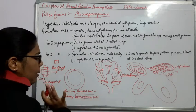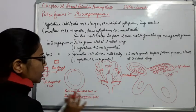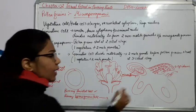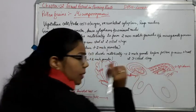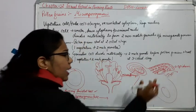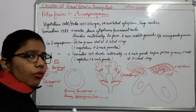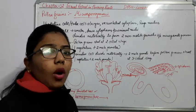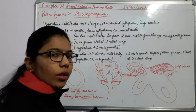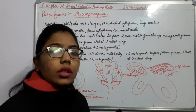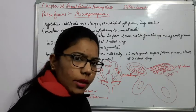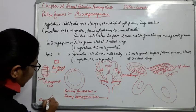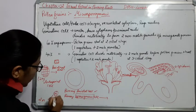We have done the primary parietal cell and the primary sporogenous cell. Now what will happen in this primary sporogenous cell at the center? It will again undergo meiotic division. When it will undergo division, it will form four haploid spores. From 2N we are getting two haploid cells first.